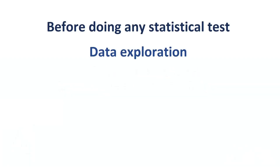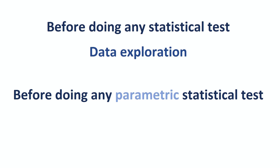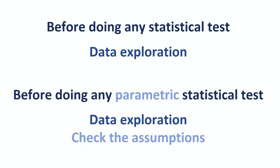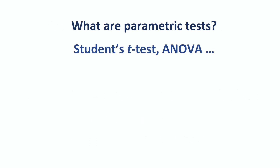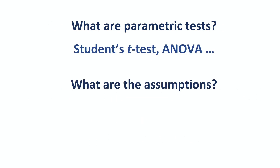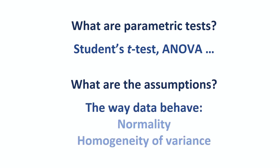Let's add some context here and be more specific. Before doing any parametric statistical test, we need to explore our data to check that the assumptions of such tests are met. Parametric tests are the classic ones, such as the t-test or the ANOVA. The assumptions are about data behavior, and the two main assumptions are normality and homogeneity of variance.